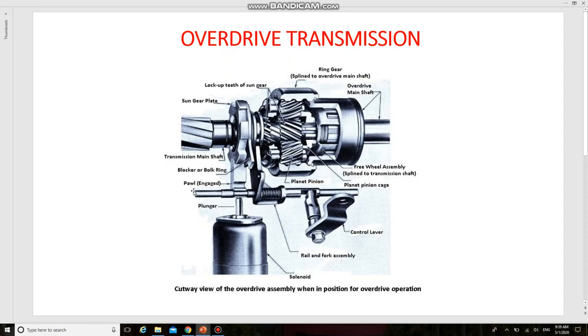When the pole is not engaged in the gear plate, the sun gear is unlocked and the planetary gears cannot transmit power. Then the unit is in direct drive. In this case, the power flows from the transmission main shaft to the freewheel assembly and then to the overdrive main shaft. This is the construction.